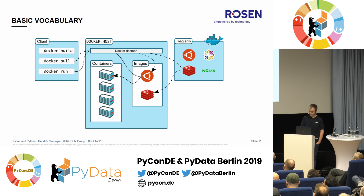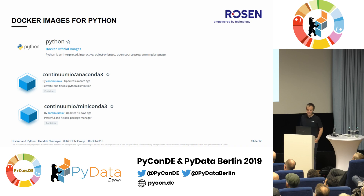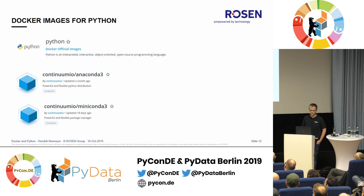There are Docker images for Python, of course. You could build your own starting from a bare Linux distribution, but you don't need to — there's an official Python image in every version you can think of: 2.x, 3.x, whatever you need. Continuum.io also provides images for Anaconda and Miniconda. What I basically do is start from either Python or Miniconda, install all the stuff I need, and then I'm ready.